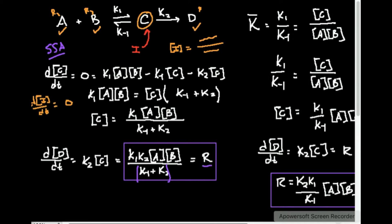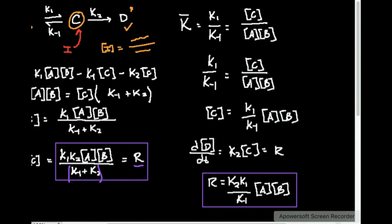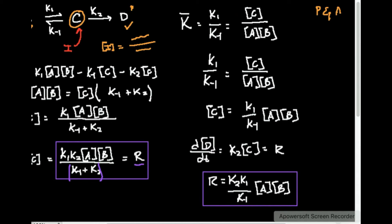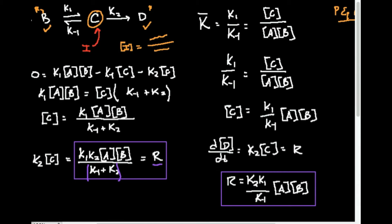What we might want to do instead is choose the pre-equilibrium approximation. We're going to do that method and see how it differs from the steady state approximation. One important thing I want to point out because it can be very confusing: the Ks — k1, k-minus-1, k2 — those are rate constants, which are lowercase k. In pre-equilibrium approximation, I also have to use the equilibrium constant, which is the big K.